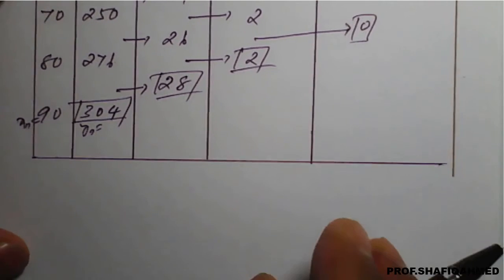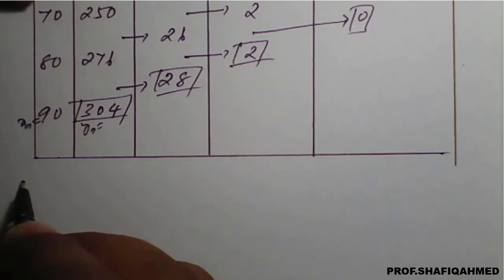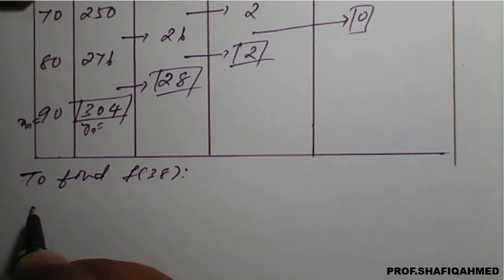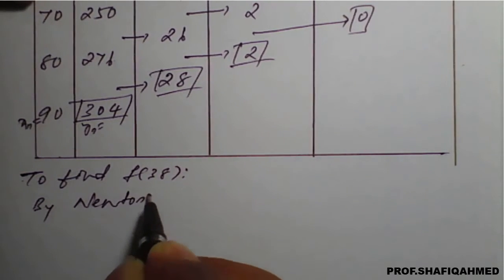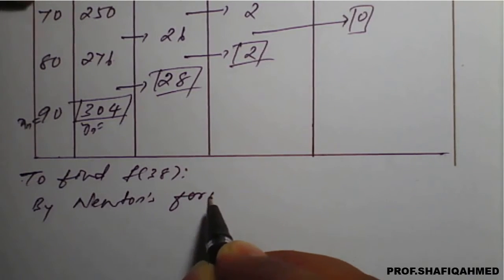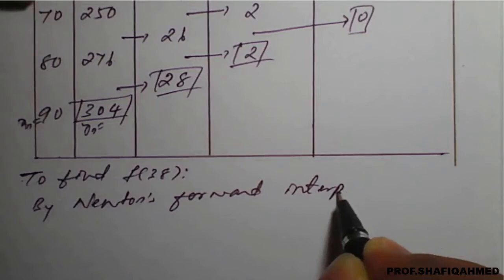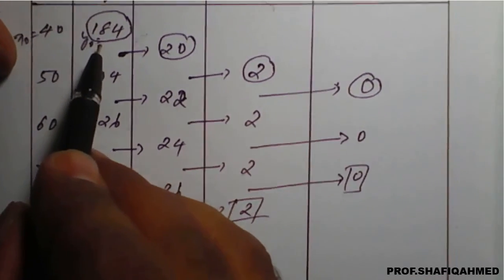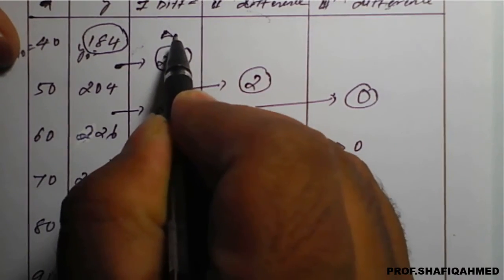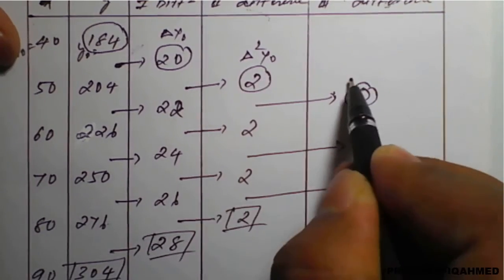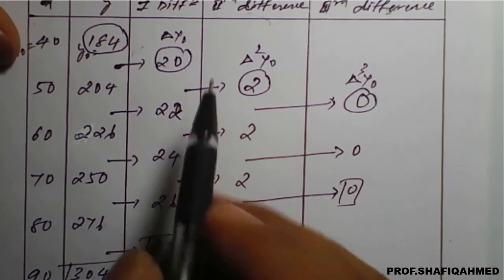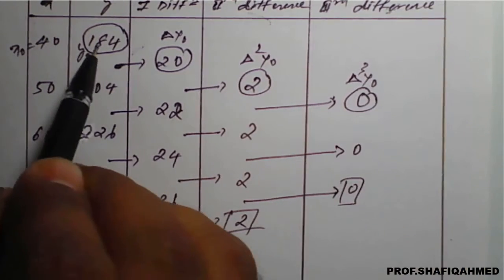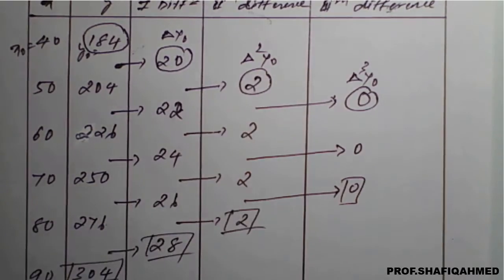To find f(38), we'll use Newton's forward interpolation formula. Here y naught is 184, delta of y naught is 20, delta square of y naught is 2, and delta cube of y naught is 0. So we will write only two terms — delta of y naught and delta square of y naught — because the next term is 0.